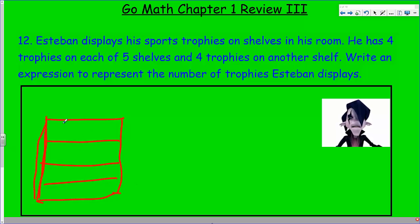There's four trophies on each one, so this gives us the visual. The X's are the trophies. He also has four trophies on another shelf, so he has four trophies on each of five shelves and then four trophies on another shelf. Almost seems like the same thing. So now we have one more.